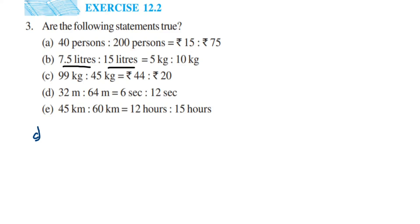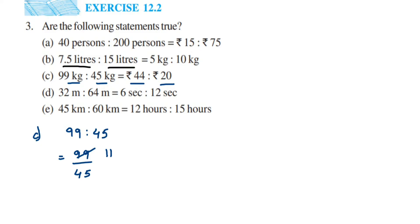Third question: 99 kg is to 45 kg is equal to ₹44 is to ₹20. First, take 99 is to 45 and convert to a fraction: 99 by 45. Cancelling in the 9 table: 9 elevens are 99, 9 fives are 45 — so we get 11 by 5, which as a ratio is 11 is to 5.